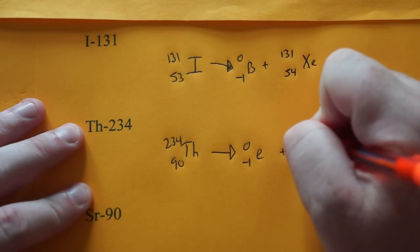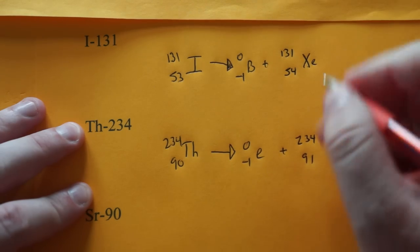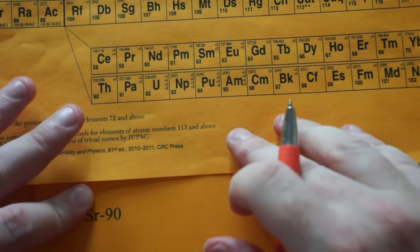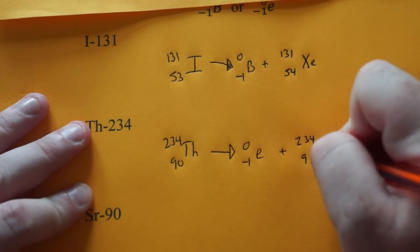The mass number stays the same up top. And the atomic number goes up by one. We look up element number 91. Promethium, PA. And we're done.